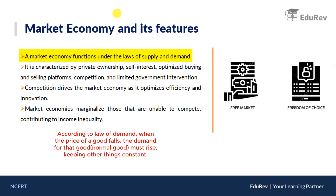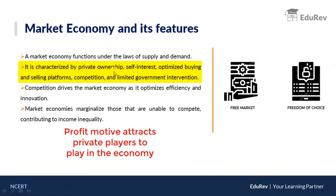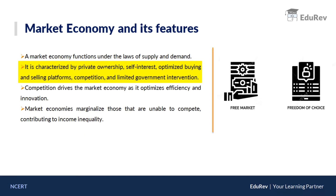So if everything remains constant and the price of a good falls, demand should rise. A market economy is characterized by private ownership, self-interest, optimized buying and selling platforms, competition, and limited government intervention. Private people — anybody — can come into the market, start their business, and earn income. There is a motive of becoming the best. Consumers and producers know that the central government or central planner doesn't intervene much, so they always have a profit motive to act in the market economy.